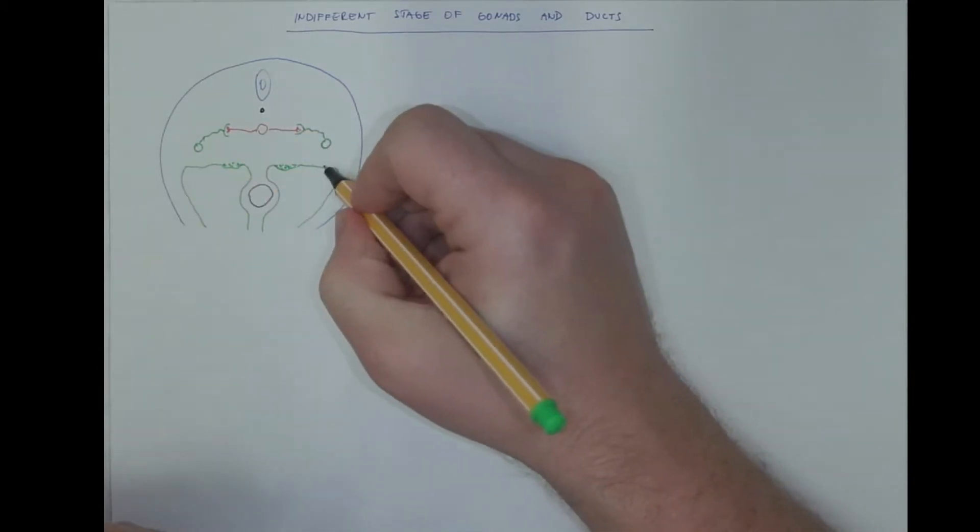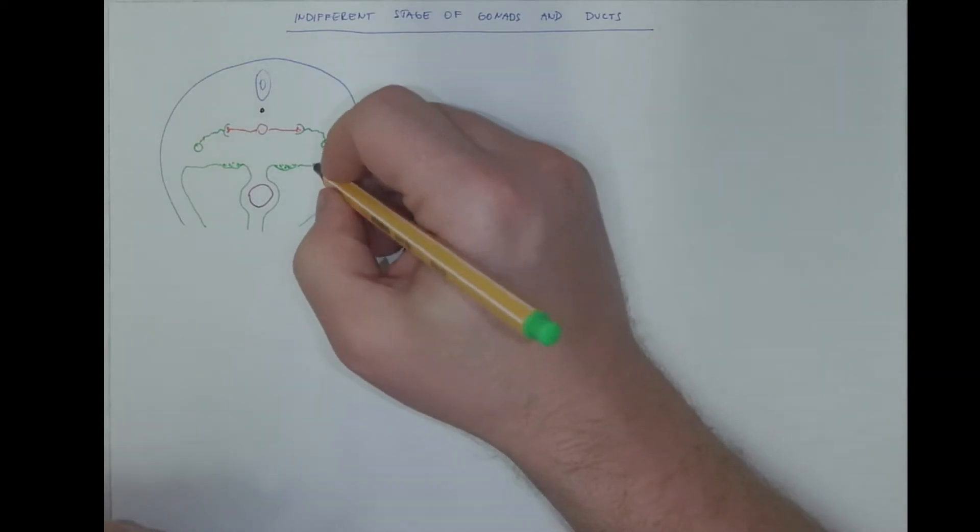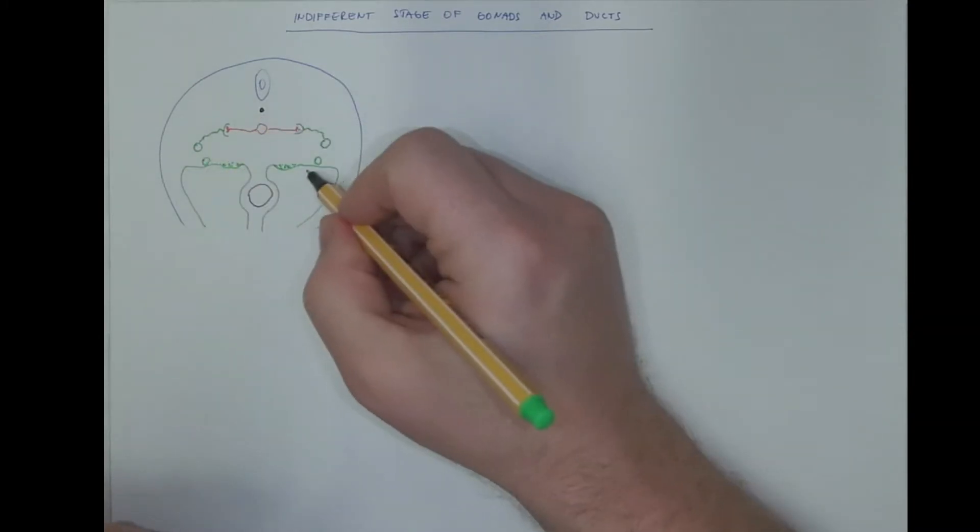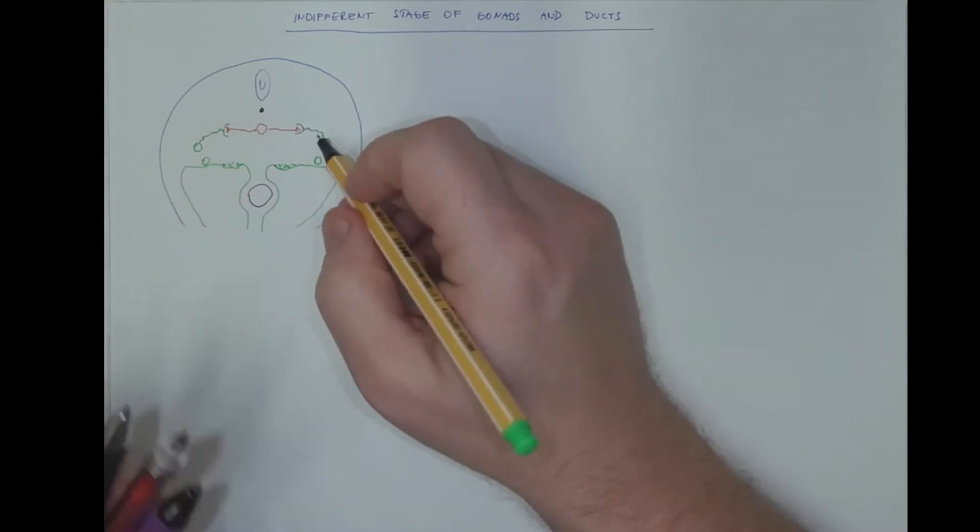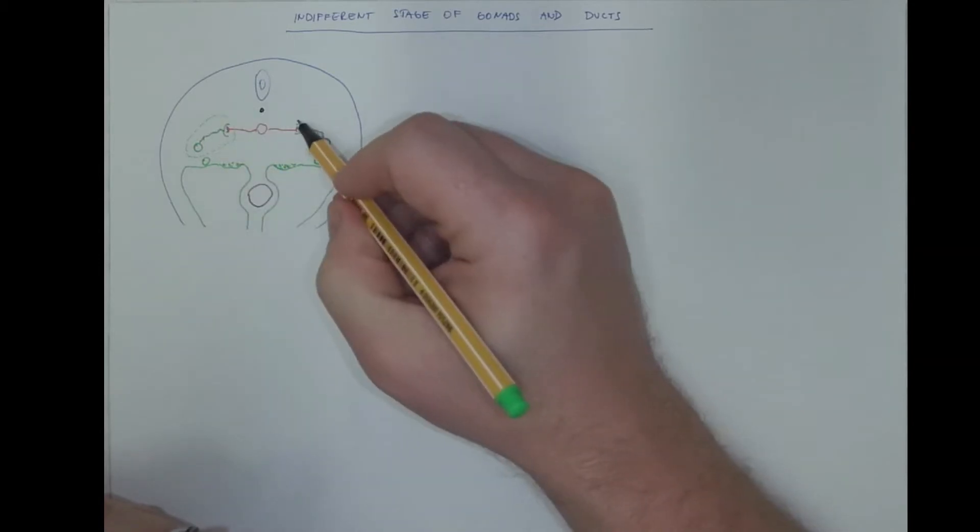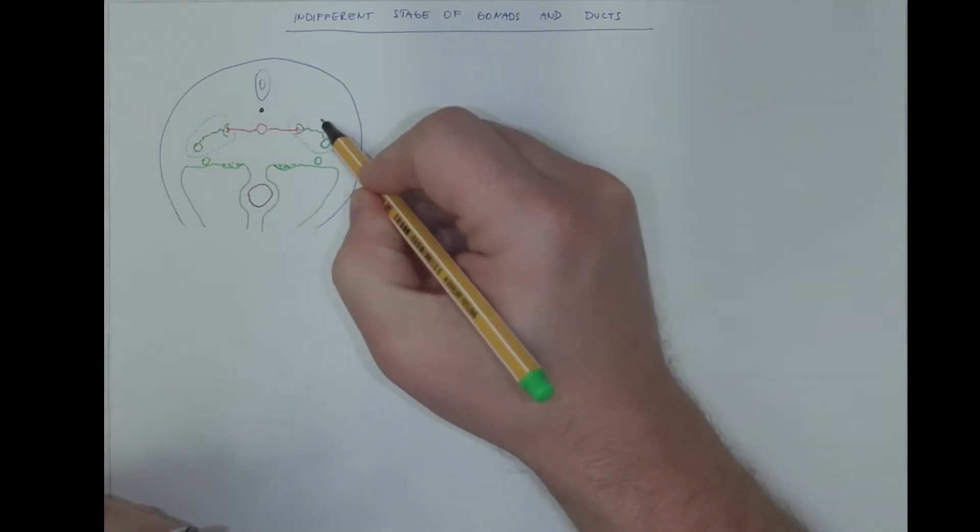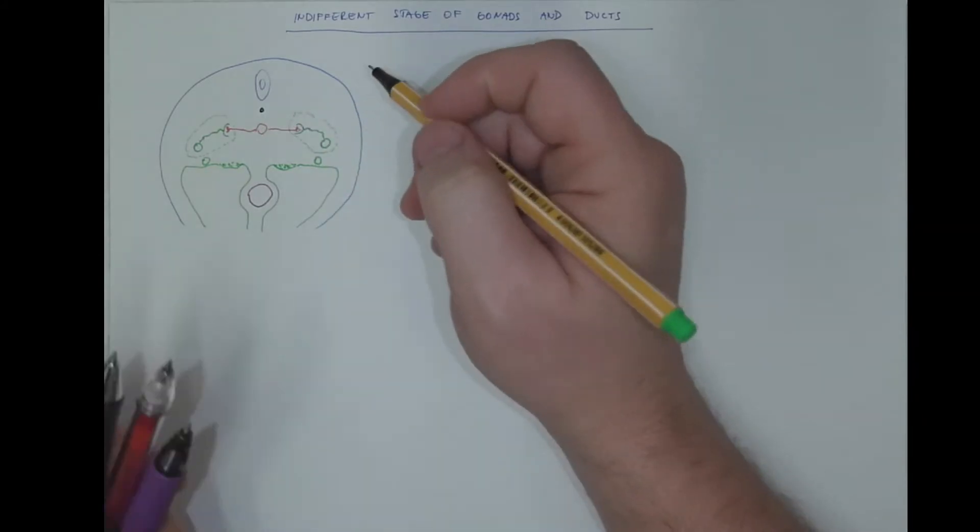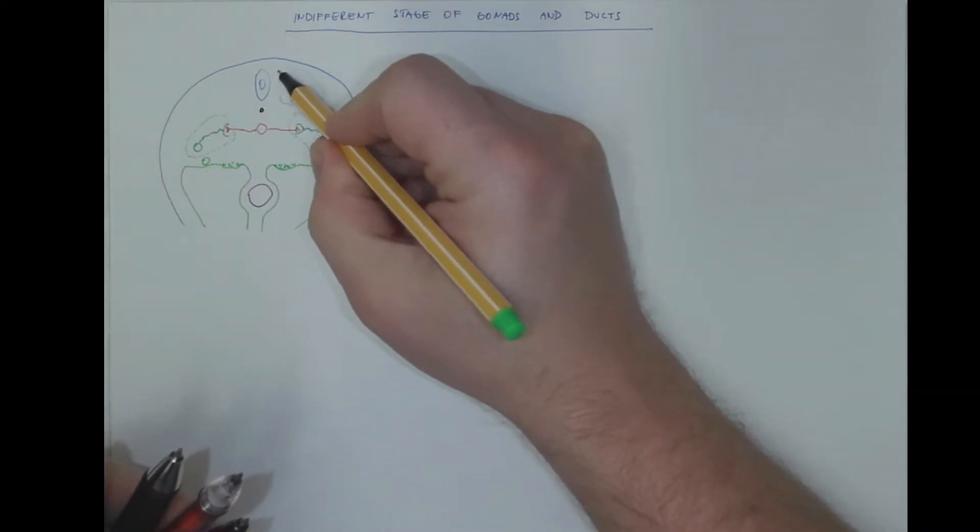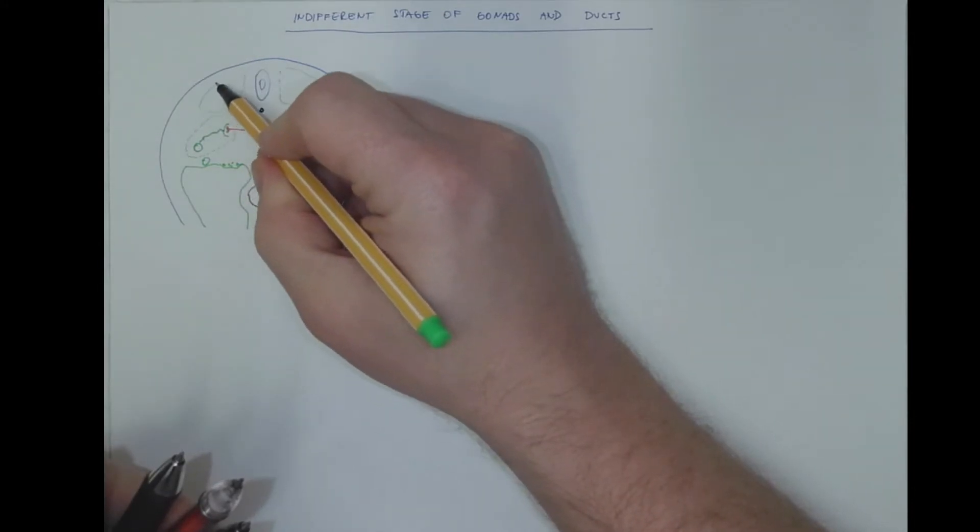I will add one more duct here, which is also of mesodermal origin, therefore drawn in green, and it will be the paramesonephric duct. This will be the outline of the mesonephros, which is a large organ going through the thoracic and lumbar region. I will also add the mesodermal body segments called somites.